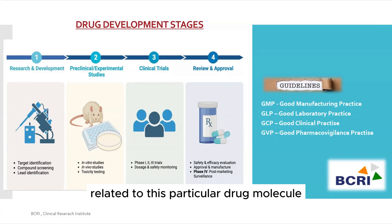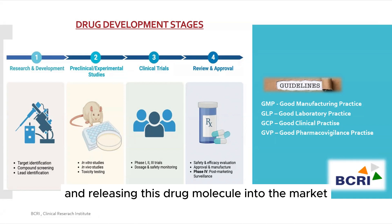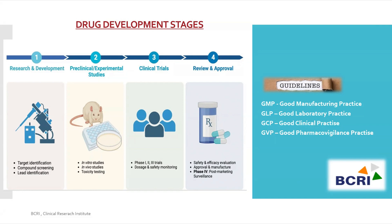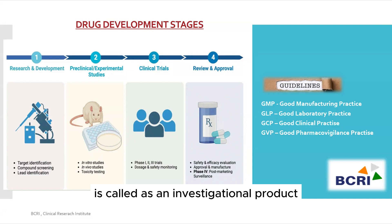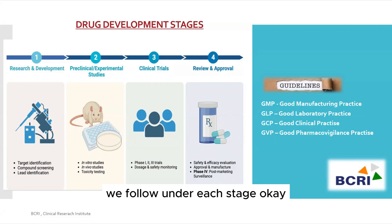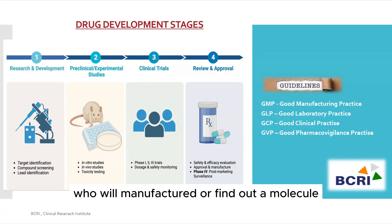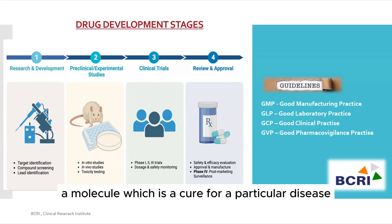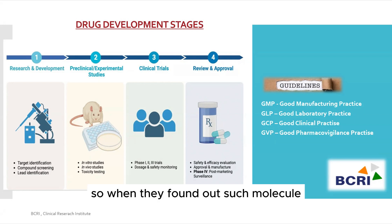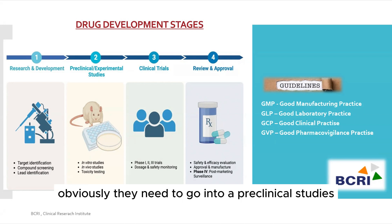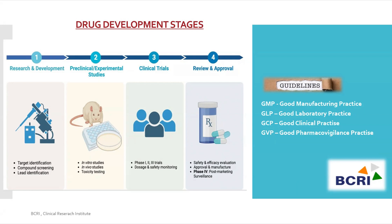These four stages describe the process of finding a drug molecule, conducting experiments, and releasing it into the market. Clinical research uses different terminology — a drug is called an investigational product since it hasn't reached the market yet. Different guidelines apply to each stage. For research and development, we follow good manufacturing practice. Sponsor companies or pharmaceutical companies manufacture or discover a molecule that could cure a particular disease.